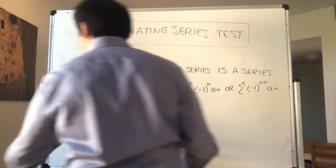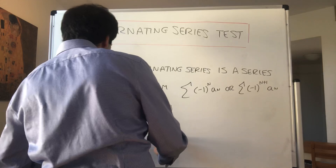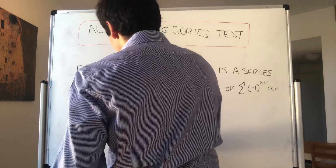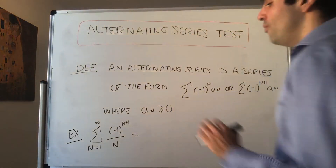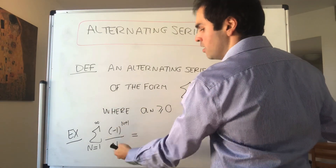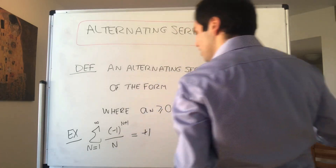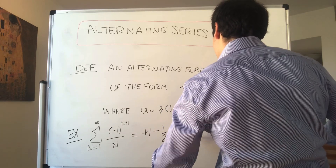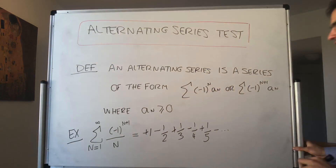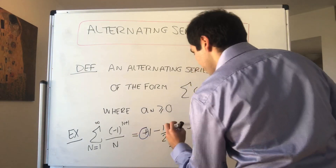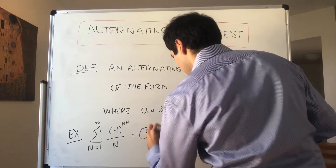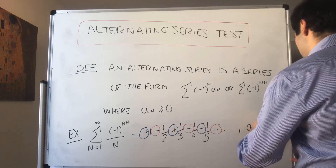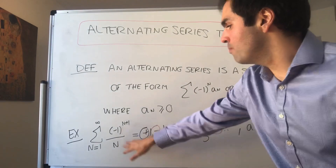For instance, consider the sum from n=1 to infinity of (-1)^(n+1) over n. The first term: (-1)^(1+1) = 1, so we get +1. Then (-1)^(2+1) = -1, giving -1/2, then +1/3, -1/4, +1/5, minus dot dot dot, et cetera. So it's really a series that alternates between plus and minus signs. In this case, a_n is just 1/n, so this is indeed of the form (-1)^(n+1) * a_n.